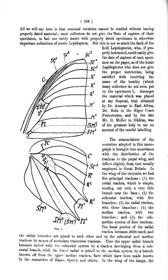Costa/costal: leading edge of the wing. Costal break: taxonomically important term used in diptera identification keys, part of the schema of wing venation; weakenings of the costa, 1–3 in number; they are flexing points for the wings during flight.